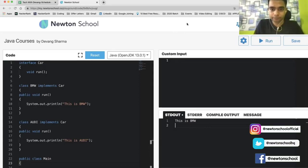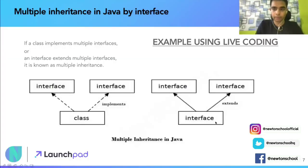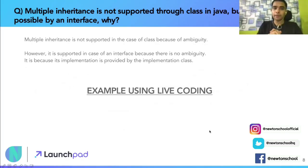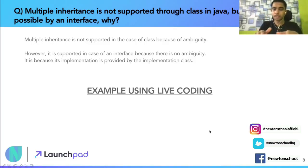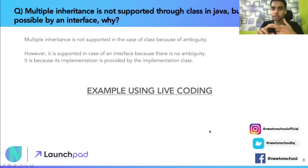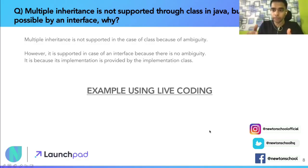Last but not the least: a very important interview question. Since multiple inheritance is not supported through classes in Java, how is it possible using an interface? Multiple inheritance is not supported in classes because of the diamond problem, which arises due to ambiguity — the class cannot determine which parent's method it is calling. But in interfaces, there is no ambiguity because the implementation is provided by the implementing class, not the interface itself. That is why multiple inheritance is supported with interfaces.